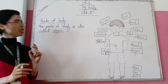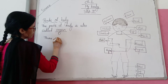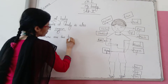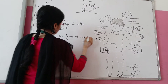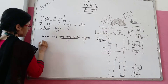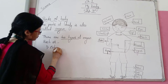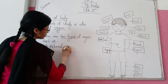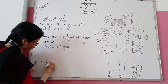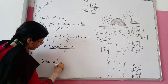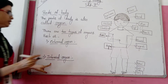How many types of organs are there? There are two types of organs in the human body: external organs and internal organs. The first one is external organ and the second one is internal organ.